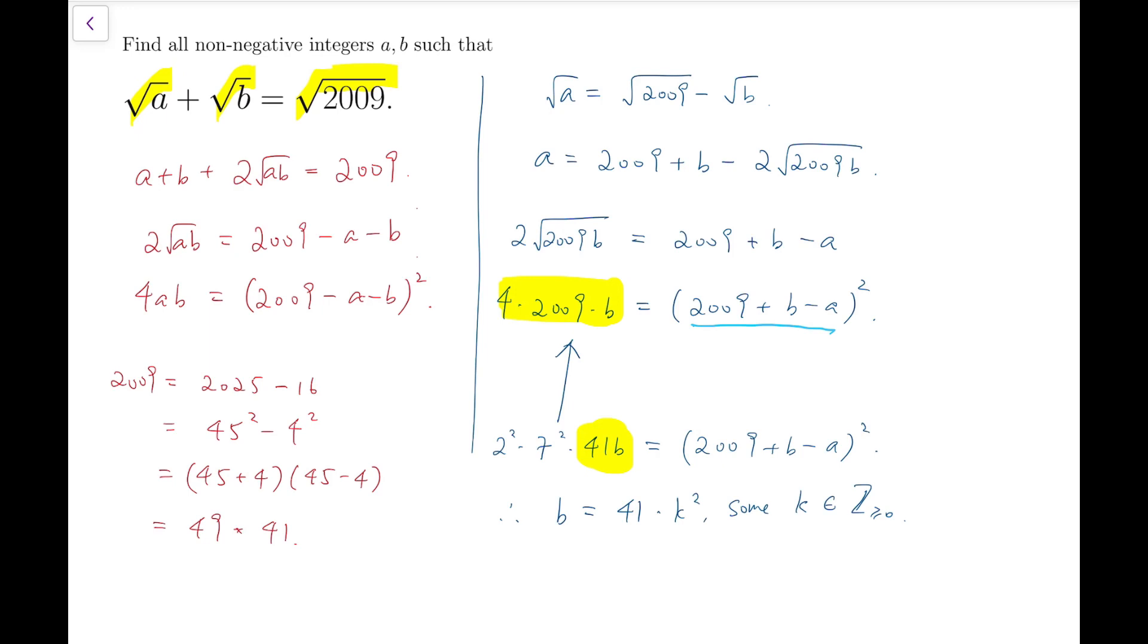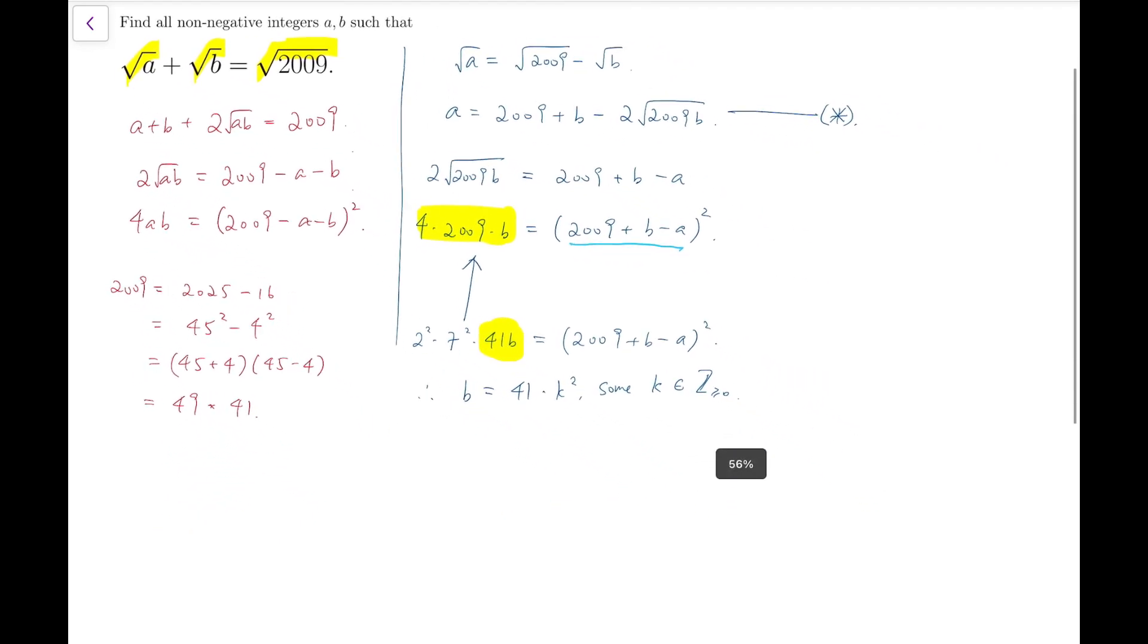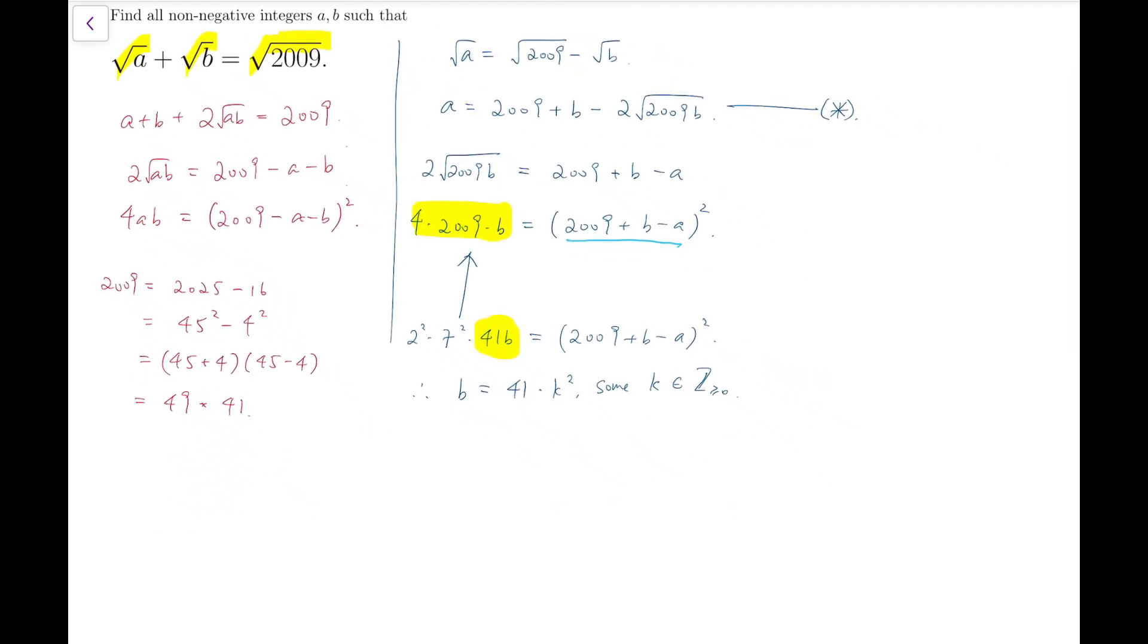Now, from this, I can put it back into this equation. Maybe I can put it back into this one. Label this with a star, and I substitute b equals 41k² into equation starred.